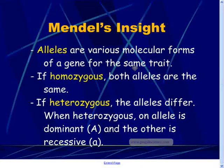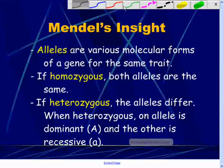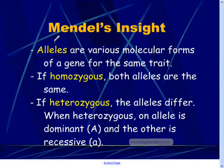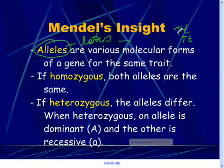There are a couple of important vocabulary words you need to be familiar with. The first one is allele. Alleles are the various molecular forms of a gene for the same trait. When you see the word allele, you need to think letters. You may have seen things like capital T and lowercase t from genetics — those letters are alleles.